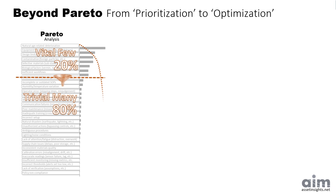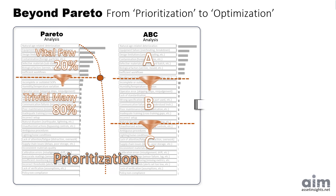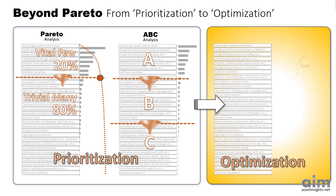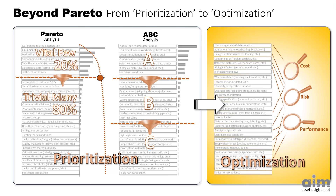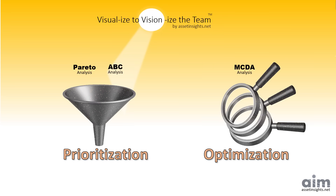Pareto helps us cut through the noise, and ABC analysis provides a more refined breakdown of priorities. But prioritization is only the beginning. The next challenge is choosing how much to invest, where, and when — balancing cost, risk, and performance. That's where the next tool comes in: multi-criteria decision analysis. It builds on Pareto's clarity, helping us move from prioritization to optimization. Join us in the next video as we move beyond prioritization and explore how to optimize decisions for maximum impact.